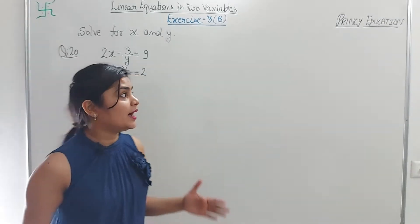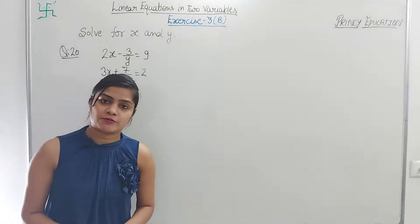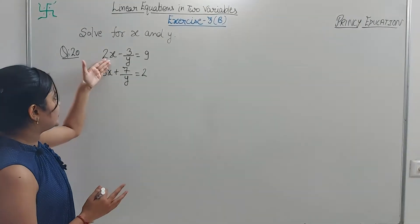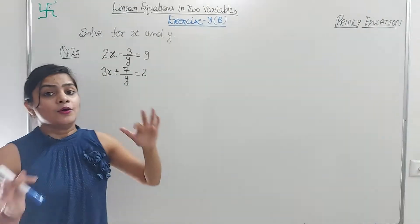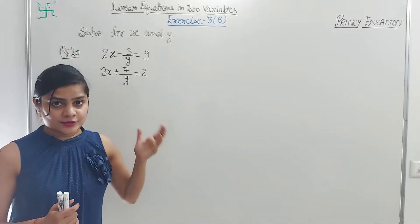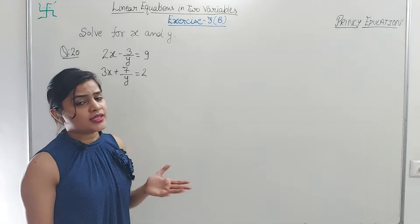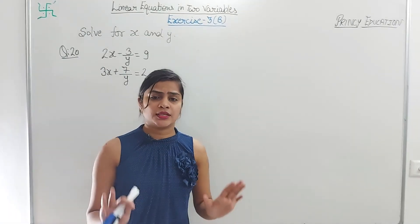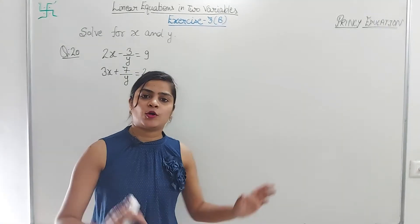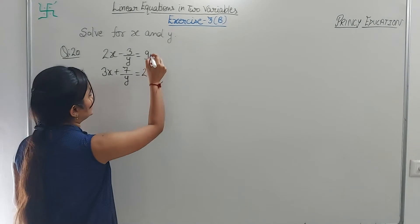Question number 20: 2x - 3/y = 9 and 3x + 7/y = 2. As I mentioned, we look at the smaller coefficient of the variable to make equal. Here x has coefficients 2 and 3, which are smaller. But I will show you both methods — whether you choose to eliminate y or x. Let's first eliminate y.